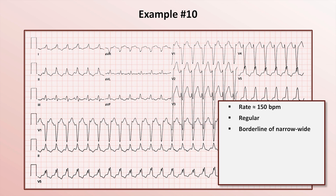What about the atrial activity? This is the tricky question. Most trainees don't see any atrial activity at all here, and it would not be unexpected for someone to conclude that a borderline wide-complex tachycardia was probably VT.